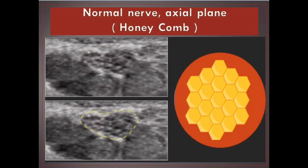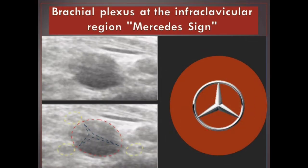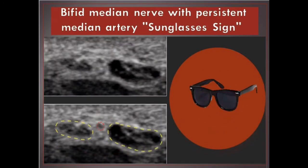Normal nerve, axial plane: honeycomb appearance. Normal nerve, longitudinal plane: rigatoni sign. Brachial plexus at the infraclavicular region: mercedes sign. Bifid median nerve with persistent median artery: sunglasses sign.